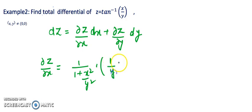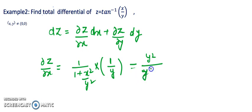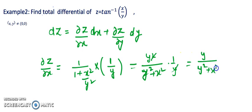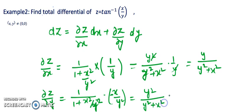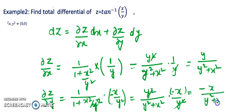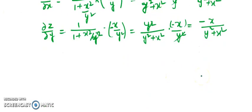Since x's derivative is 1 and 1/y is constant, after simplification we get y² over (xy² + x²) times 1/y, and the y's cancel, giving y over (y² + x²). Similarly, for the partial differentiation with respect to y, the first expression is 1 over 1 plus (x/y)², and x is now constant, so the derivative of 1/y gives minus 1/y². After simplification, taking y² plus x² as common, we get minus x over (y² + x²), which can also be written as minus x over (x² + y²).